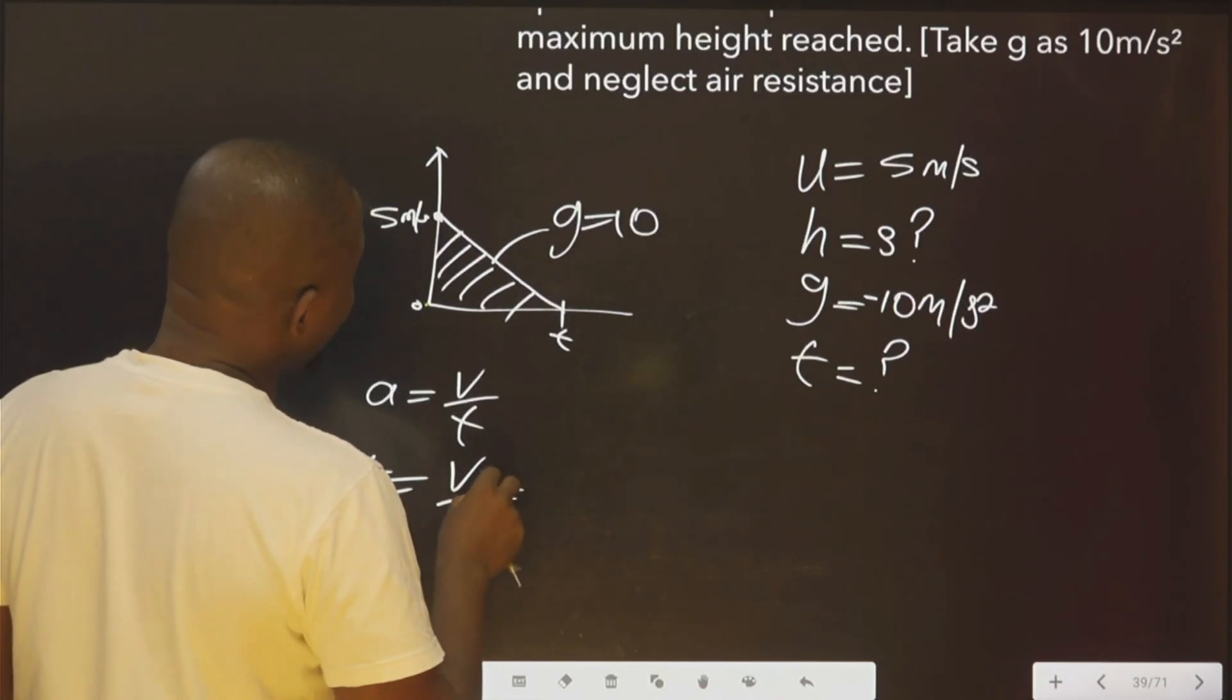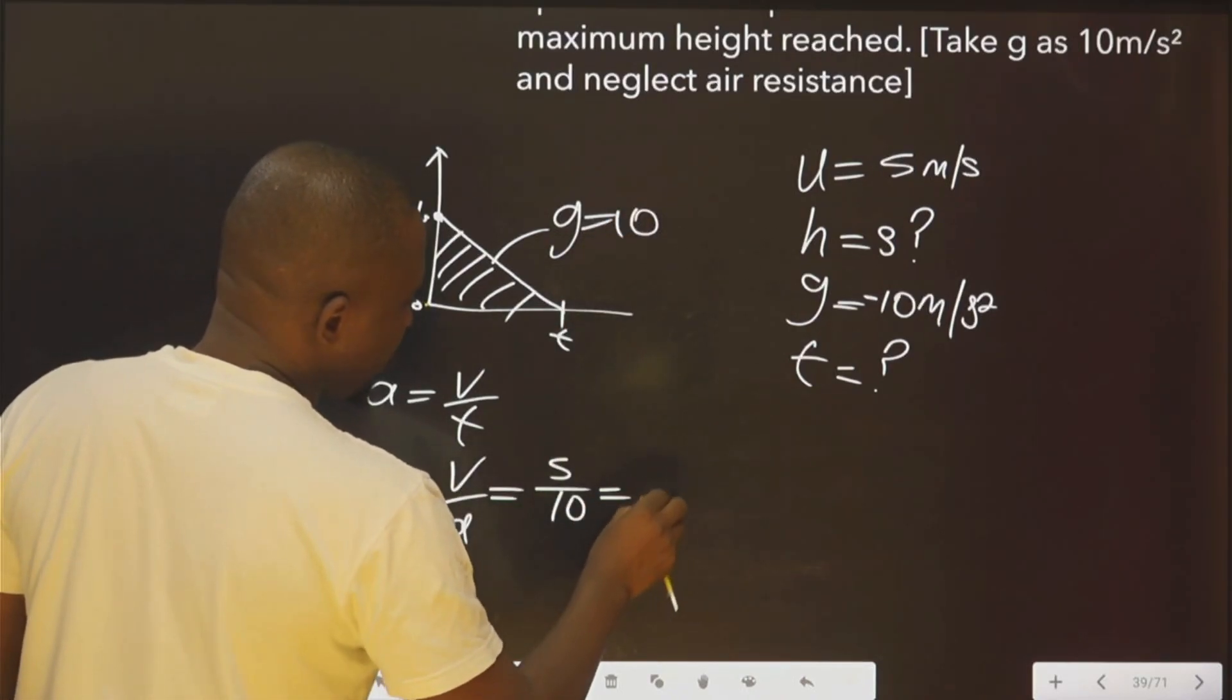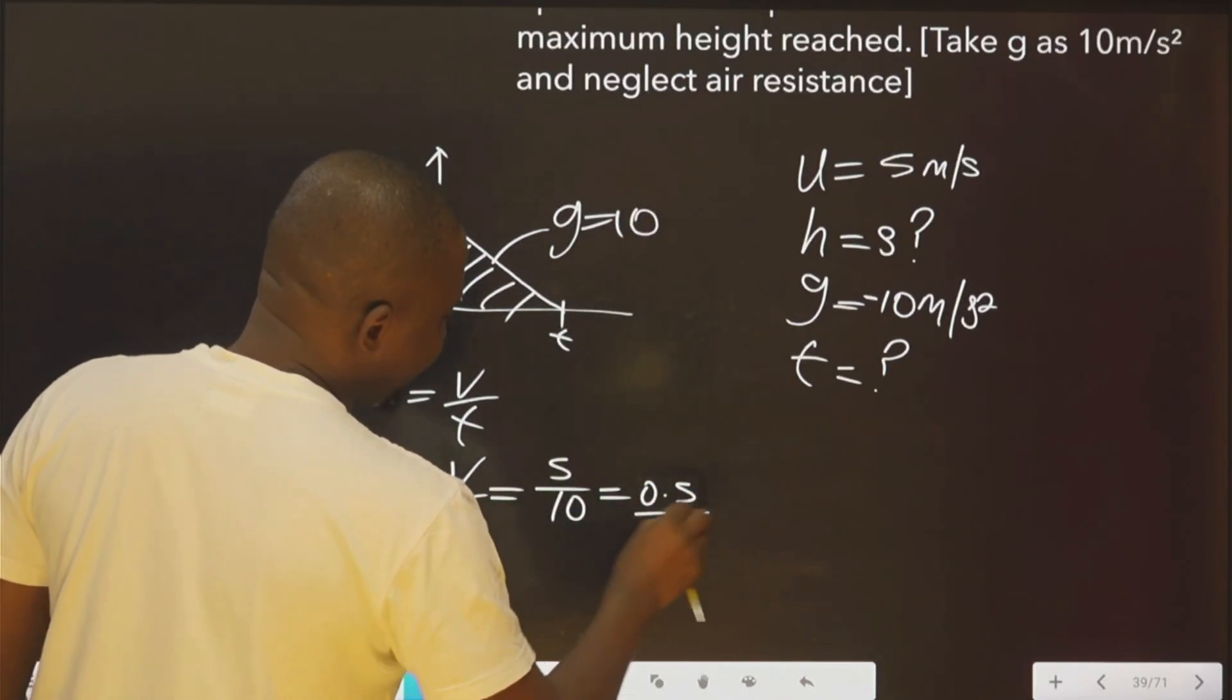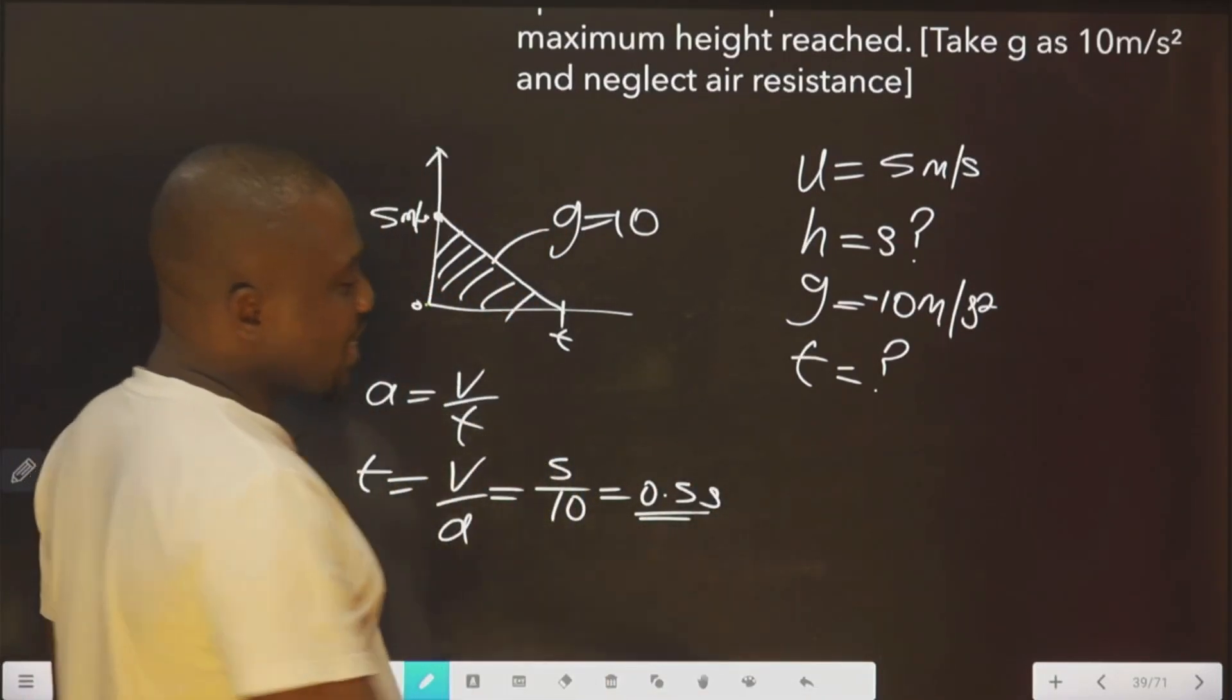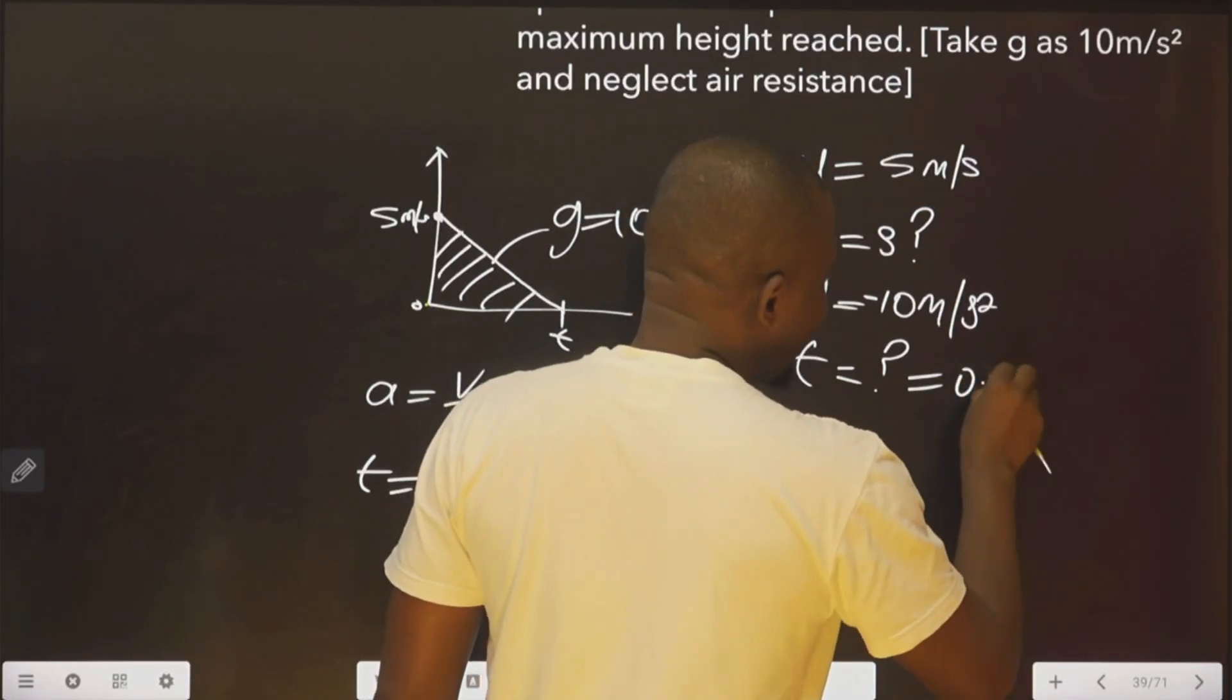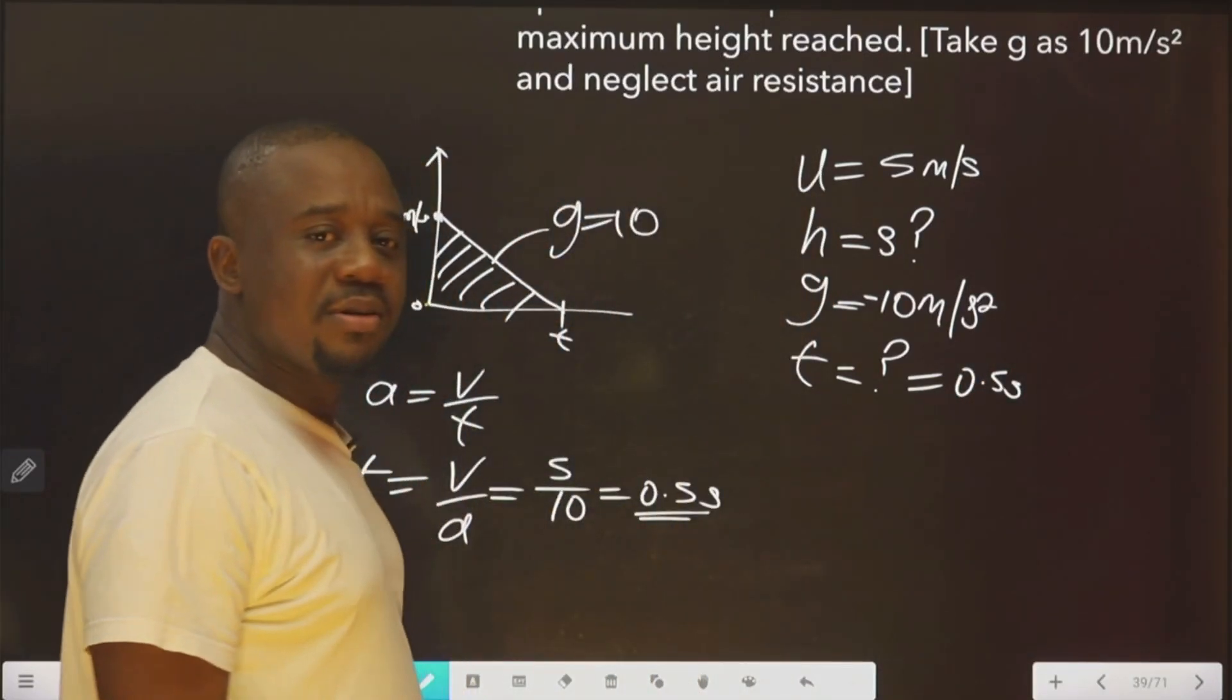Which is equal to v is 5 over a is 10. Which is equivalent to 0.5. Okay? In seconds. So we can say here t is 0.5 in seconds.